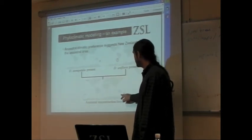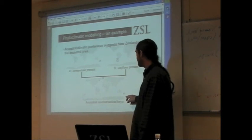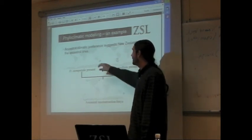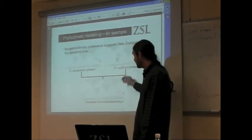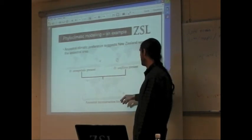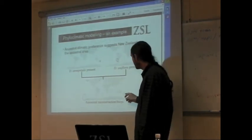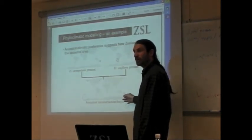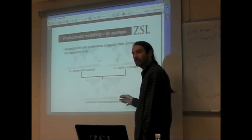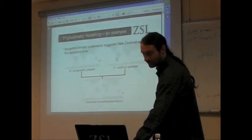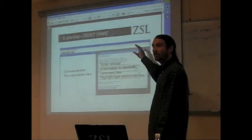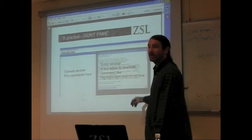It turns out that in this case it selects New Zealand. It's not just picking one model over the other, because it selects the climate reconstructed for that particular time period. So we're now going to try a very simple version of that model using R.